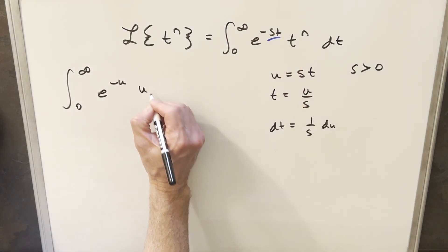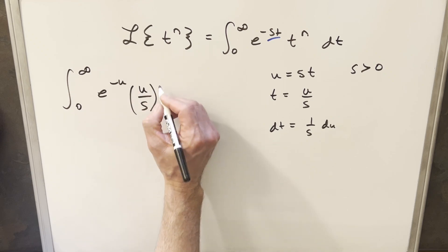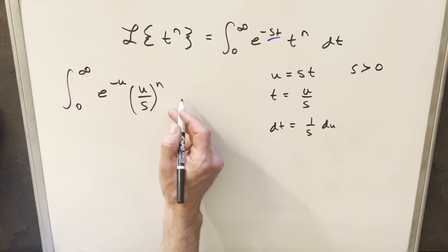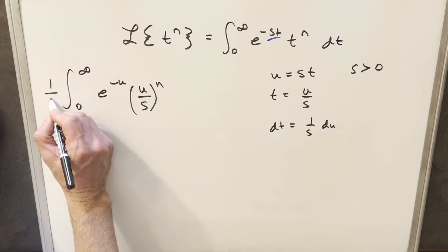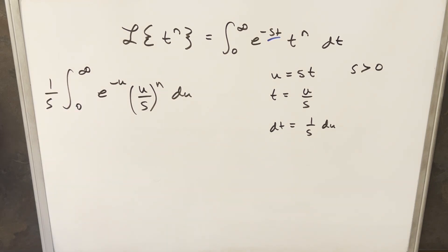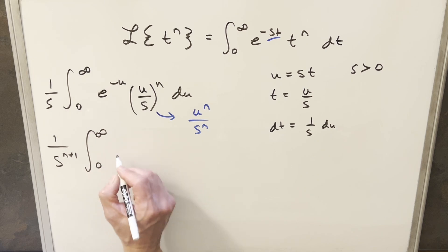Then this is going to become e to the minus u. Our t value, we have our value here, so this is going to be u over s to the n, and our dt value is this. But I'm going to take the 1 over s and bring it out front, and then we'll just have du. Now for this u over s thing, I can actually split that up, I can write it as u to the n over s to the n.